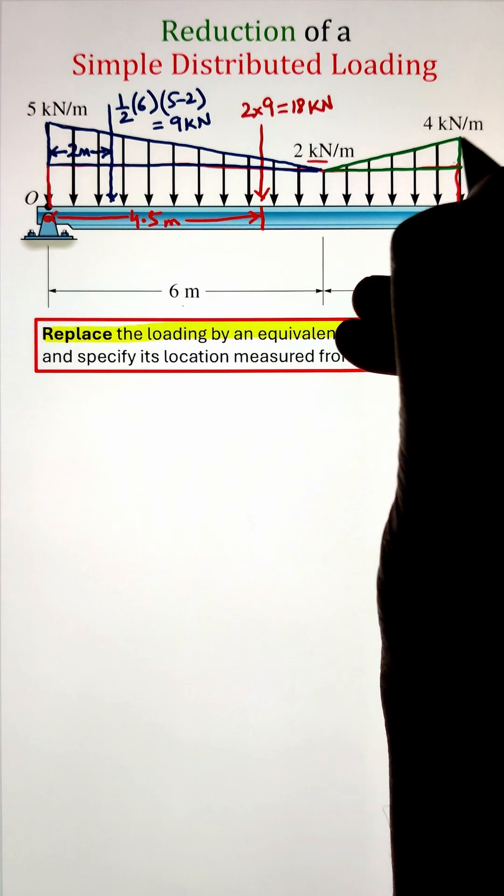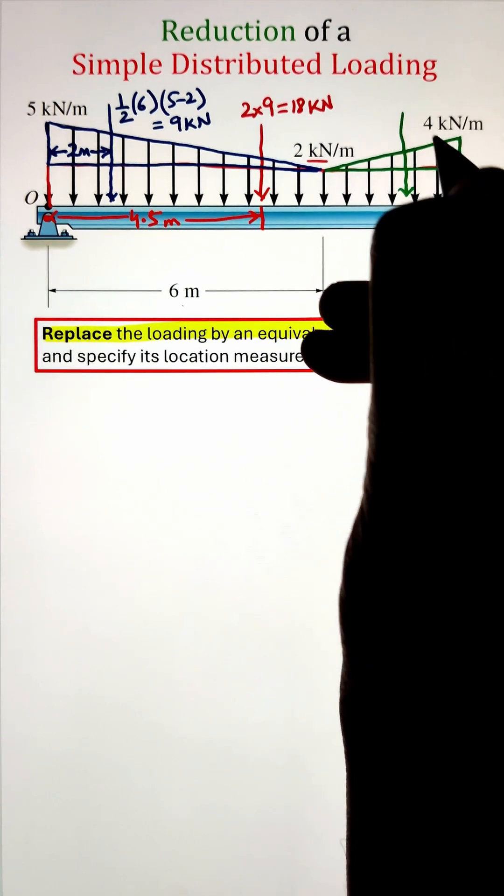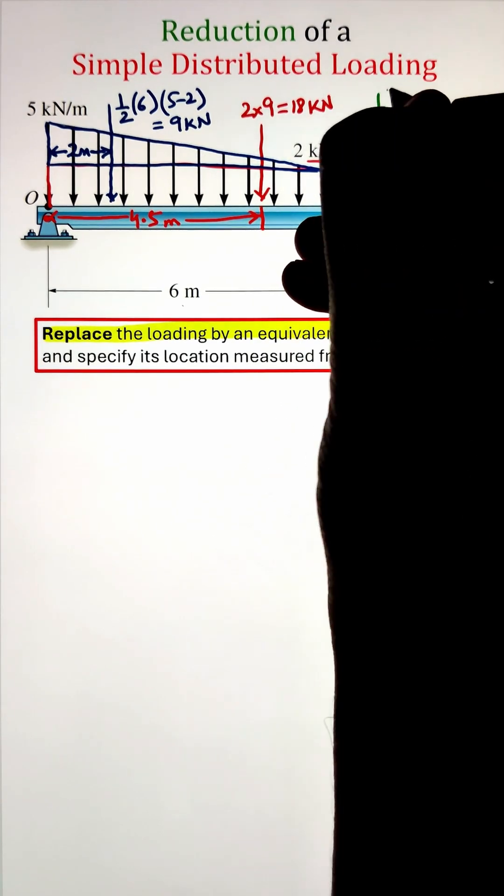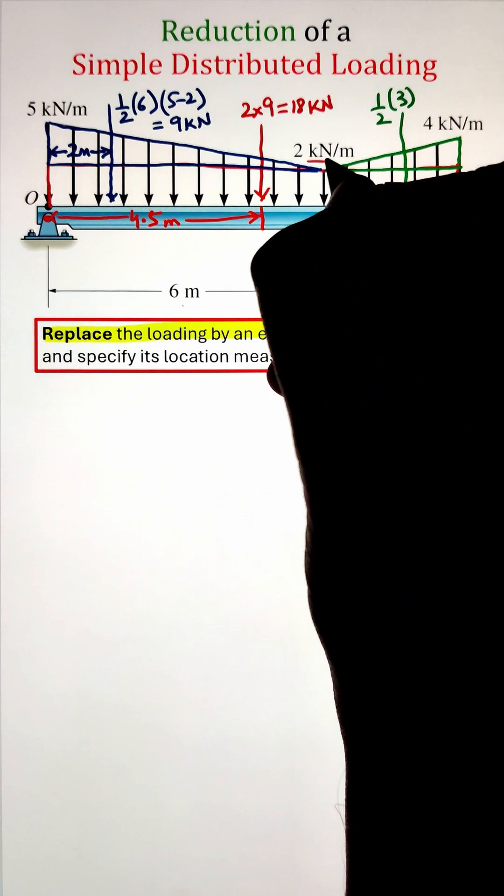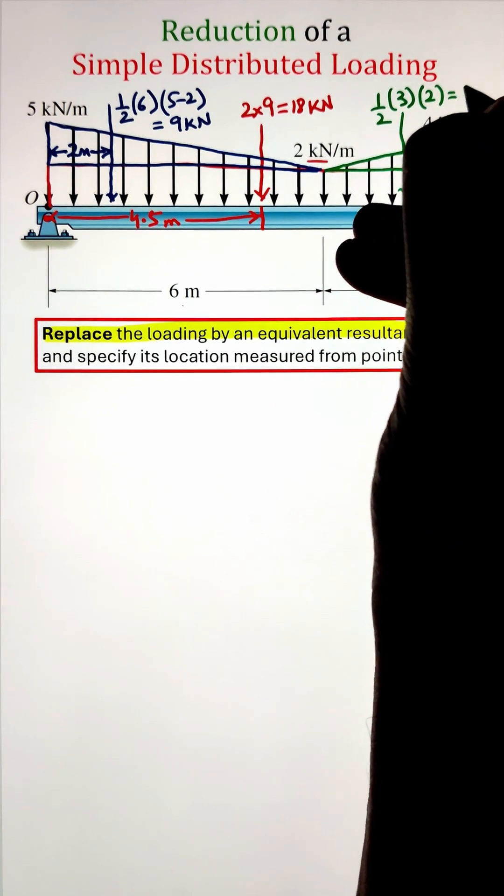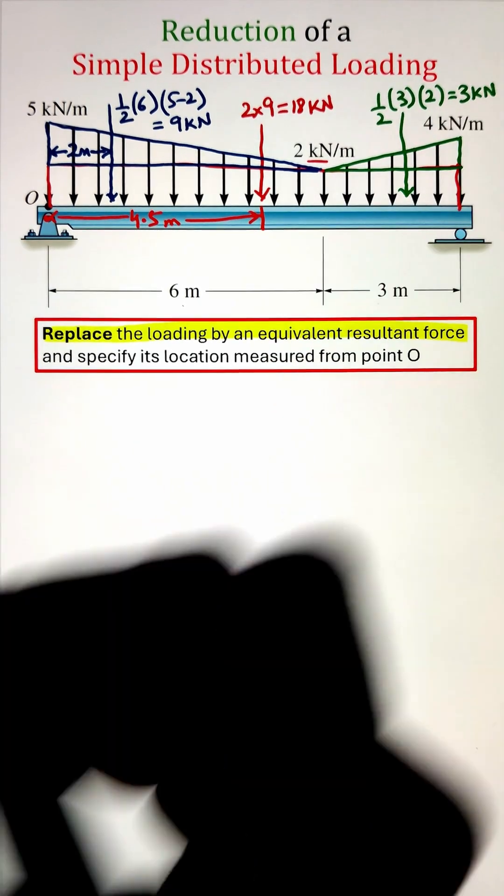Next, I have another right angle triangle on the right in which we can again calculate the area by half times base times the altitude of the right angle triangle that gives us the value of 3 kilonewton.